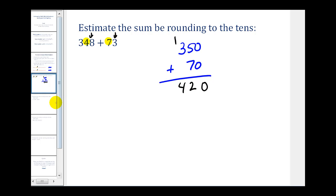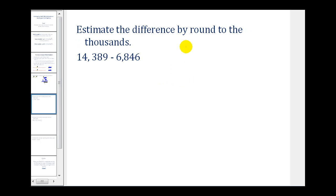Let's take a look at a couple more examples. Here we want to estimate the difference by rounding to the thousands. So this four is in the thousands and so is the six. The digits to the right will tell us to round up or round down.